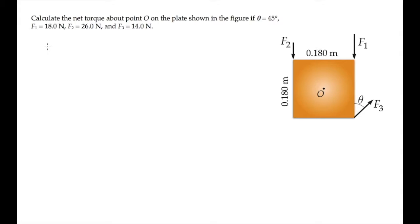This problem asks us to calculate the net torque about point O on the plate. The torque created by a force F is the vector cross product, R cross F, where R is the vector from the pivot, O in this case, to the force.